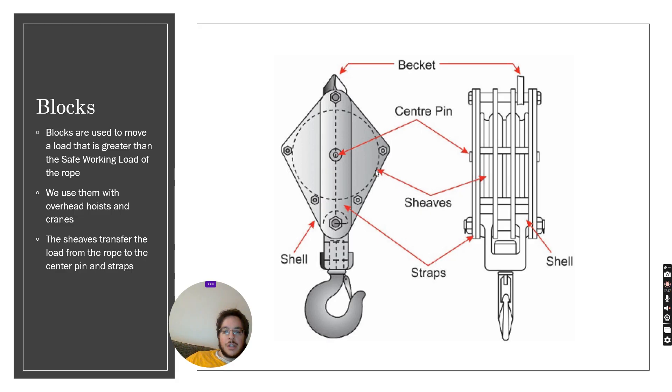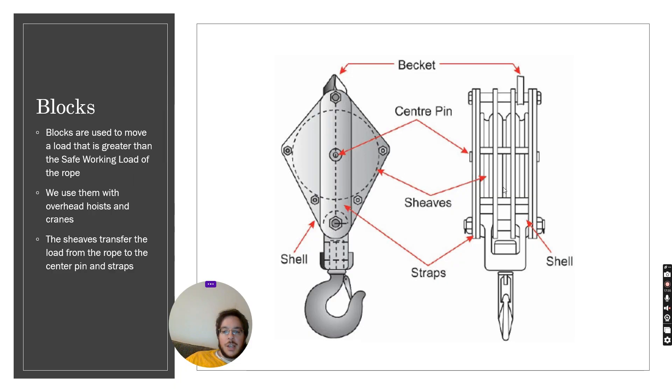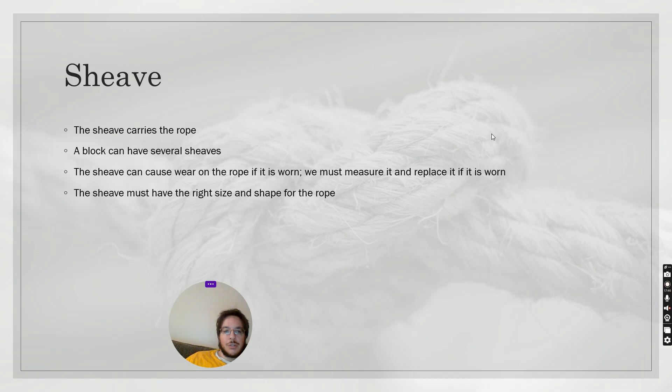Now you'll notice here there's a sheave. The sheave is what carries the rope and we have to be careful to choose a sheave that is the right size and shape for the rope that we're using. Notice that the sheave will wear out the rope after a while so we must make sure to inspect the rope.